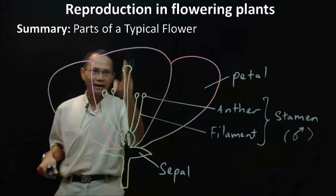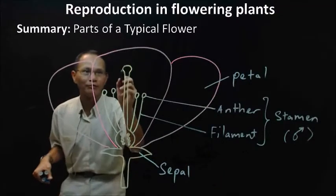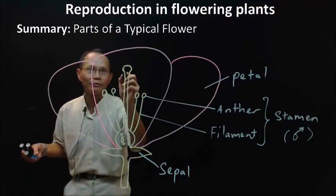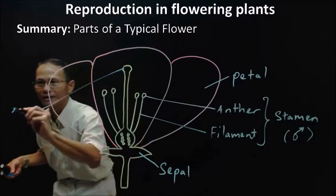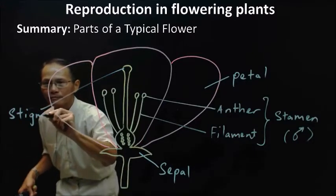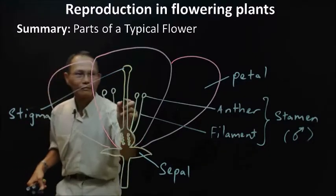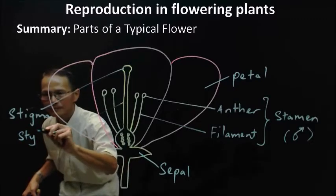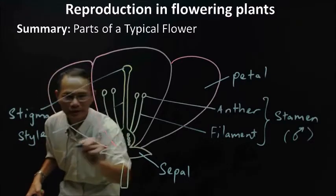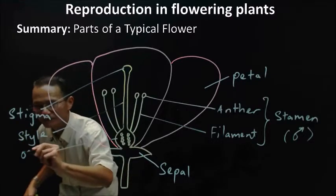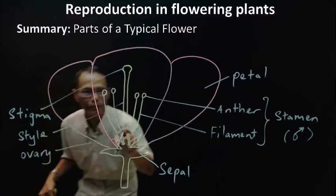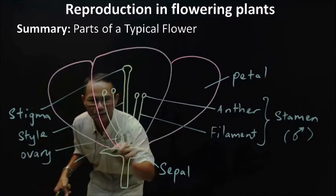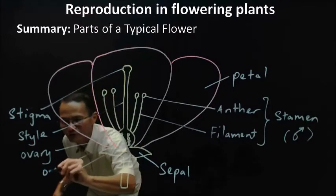And on the other hand, the last whorl — the fourth whorl — is the female reproductive organ, which is made up of the stigma, style, and the ovary. And within the ovary, you have ovules.